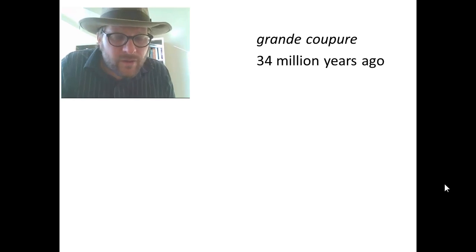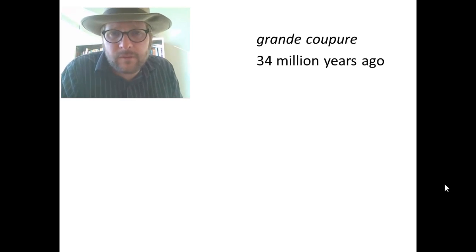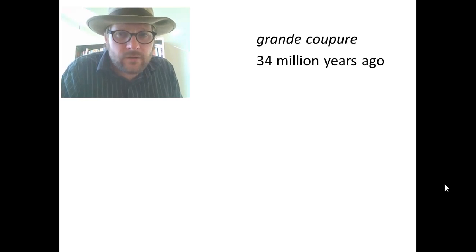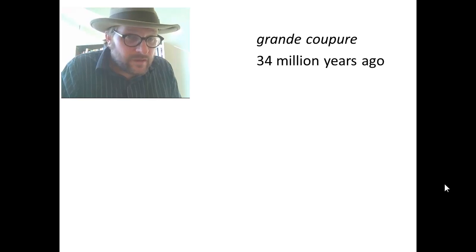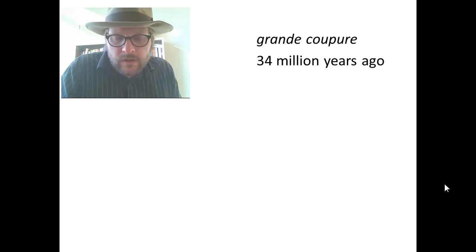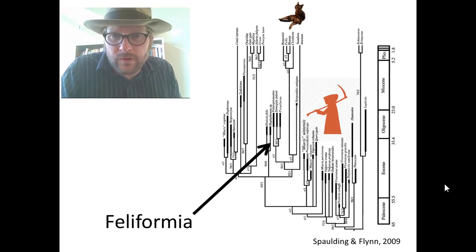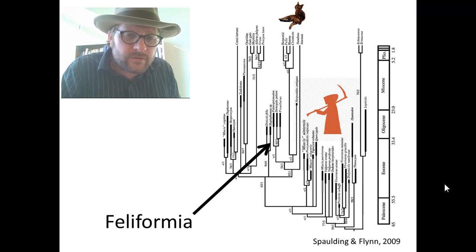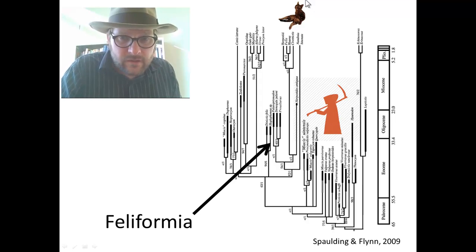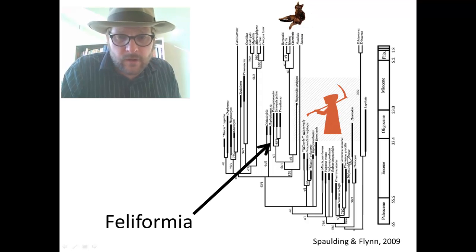Something happened about 34 million years ago to cause most of the Miacidae and Viverravidae to go extinct. This is often referred to as the Grande Coupure, which occurred at the end of the Eocene epoch at the beginning of the Oligocene, 34 million years ago. It was during this period that the climate started to get colder and colder, and habitats started to open up. At this point we get the first Feliformia — a group very closely related on the evolutionary tree to our domestic house cat.